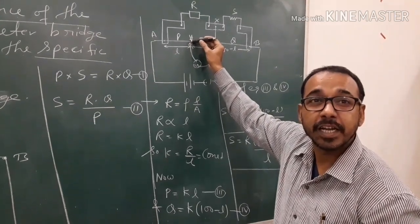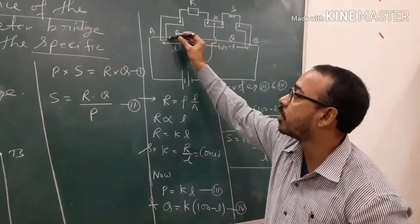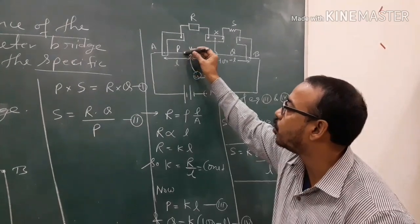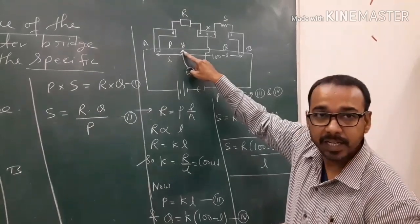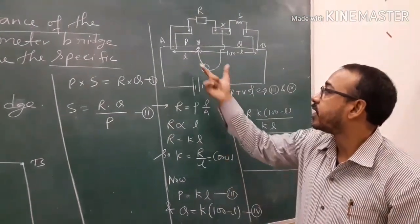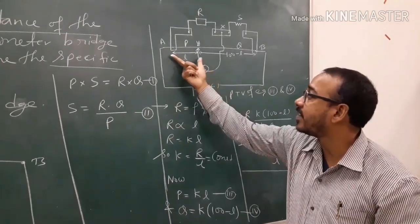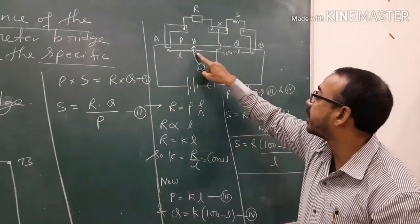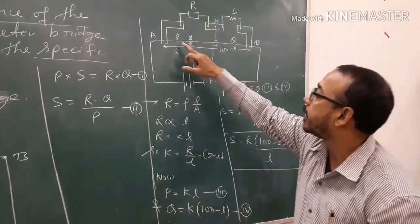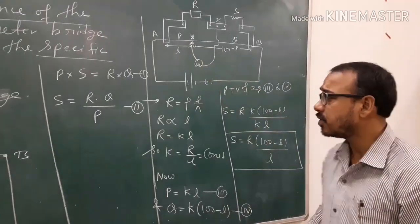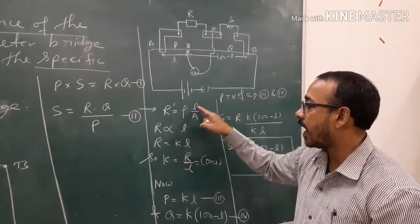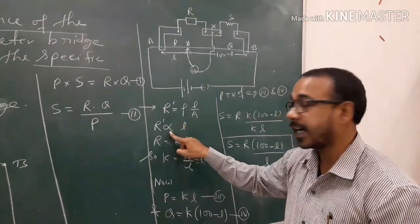That is why it is called the slide wire meter bridge — because you slide the jockey over the length of the wire. By sliding, you will find a null point where the galvanometer shows no deflection. At this null point, for length l the resistance equals P, and for the remaining length (100 minus l) the resistance equals Q. The resistance of a uniform wire is given by R' = ρl/A, so R' is directly proportional to the length.